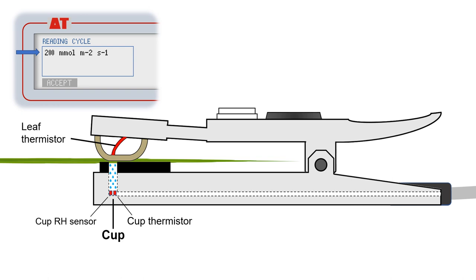After each measurement, dry air is pumped from the body of the AP4 into the cup, resetting humidity levels, and a new measurement cycle starts. This two-step cycle continues briefly until a consistent leaf conductance reading has been established.